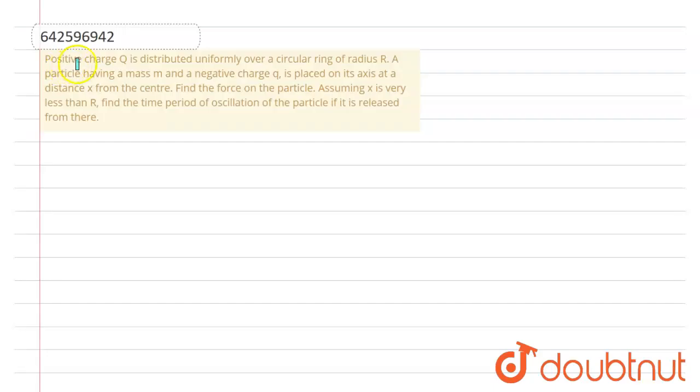In this problem, we have given positive charge Q is distributed uniformly over a circular ring of radius R. A particle having a mass m and negative charge q is placed on its axis at a distance x from the center. Find the force on the particle.